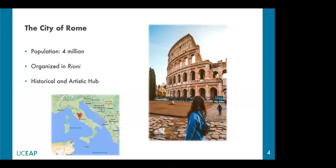As most of you already know, Rome is the capital city of Italy, located in the very center of the country. Its strategic position allows you to easily travel to both the northern and southern regions of Italy. It is also a hub for many European airlines and is very well connected with all 27 EU countries. Rome has a population of about 4 million people, reaching 6 million during spring season including tourists. The city is organized in neighborhoods called Rioni, and it is one of the most important historical and artistic hubs in Europe.